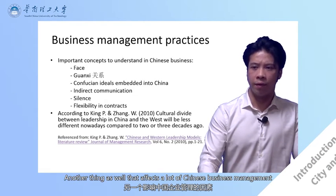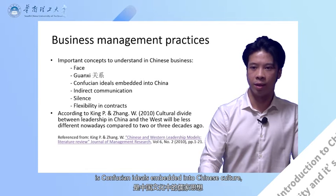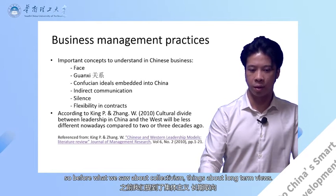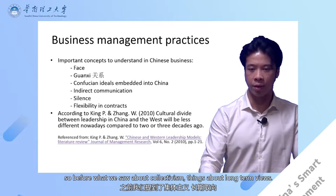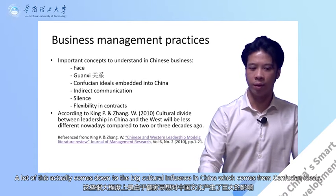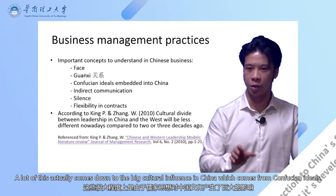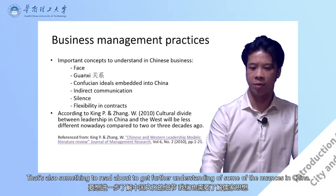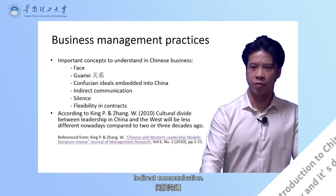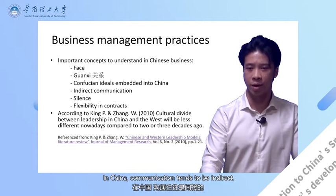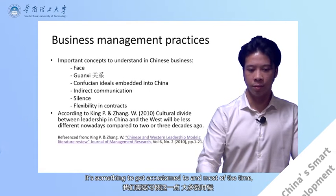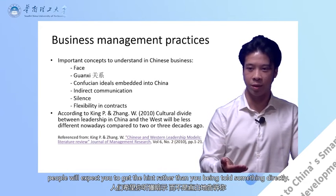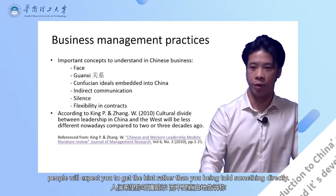Another thing that affects Chinese business management is Confucian ideals embedded into Chinese culture. Things like collectivism and long-term views actually come down to the big cultural influence of Confucian ideals in China — that's something to read about to get further understanding of the nuances. Indirect communication: in China, communication tends to be indirect. Most of the time, people will expect you to get the hint rather than being told something directly.